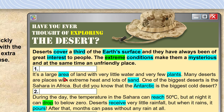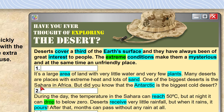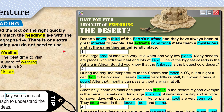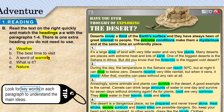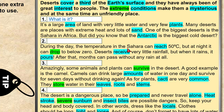A desert is a large area of land with very little water and very few plants like trees and flowers. Many deserts are places of extreme heat and lots of sand. One of the biggest deserts is the Sahara in Africa. But did you know that the Antarctic is the biggest cold desert? So deserts can be very cold. The best heading for this paragraph is D — 'What is it?' — because we are defining deserts.